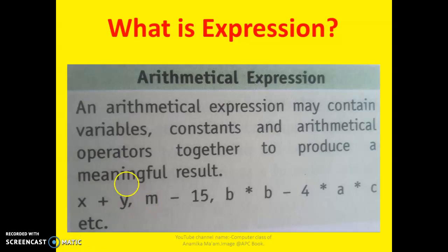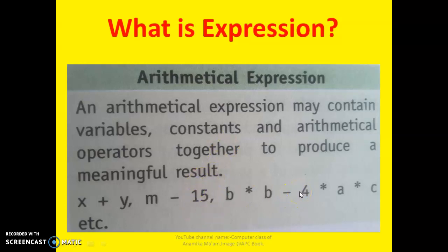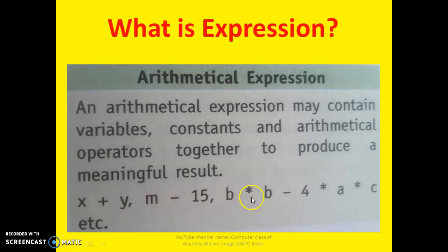Variables mean any value that is not fixed. Then there are constants — a constant has a fixed value. Suppose 16 or 4 is called a constant. And expressions also contain operators — such as plus, minus, multiplication, and division. These are the arithmetic operators.